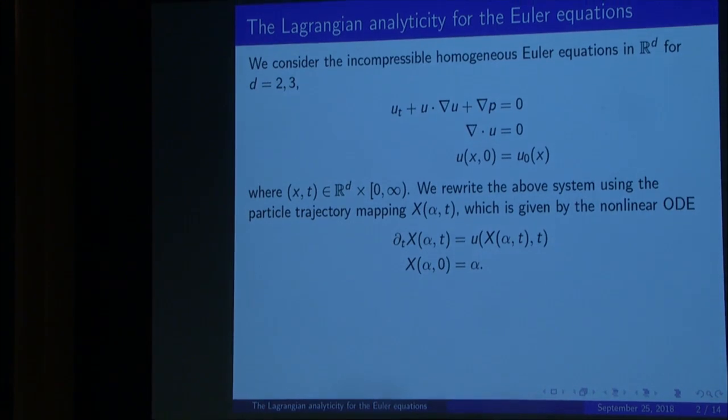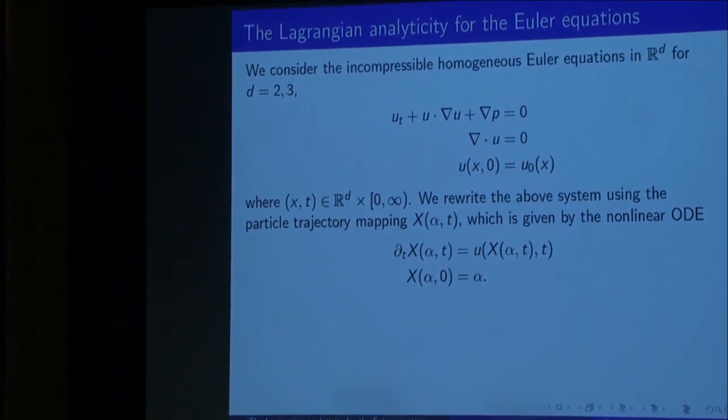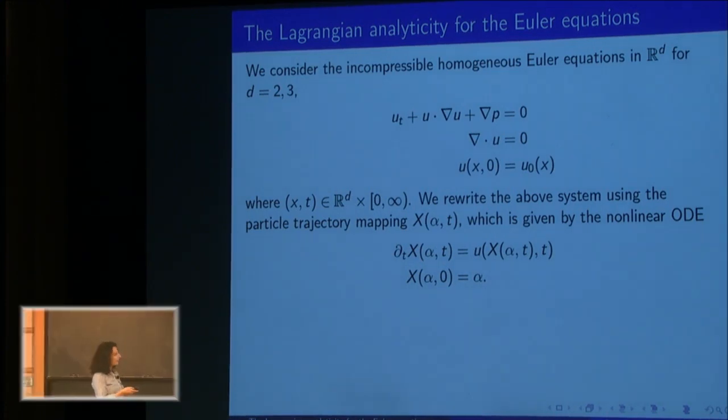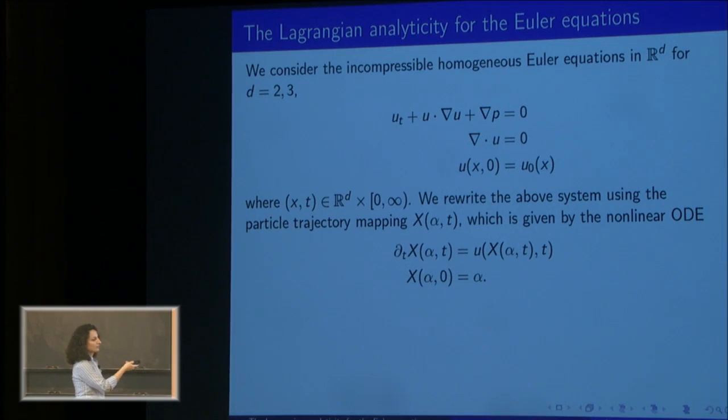Starting from the first one, before we get to the analyticity, let me introduce a little bit about the Euler equations. The incompressible, homogeneous Euler equations can be written in this way, given by this system. We consider the system in the whole space for dimensions two and three. The first one is the momentum equation, the famous momentum equation for fluids. The second one is the divergence zero condition, the continuity of mass, which also gives us the incompressibility of our fluid. We combine this set of equations with the initial condition at time t equals zero. The system is written in terms of the Eulerian coordinates.